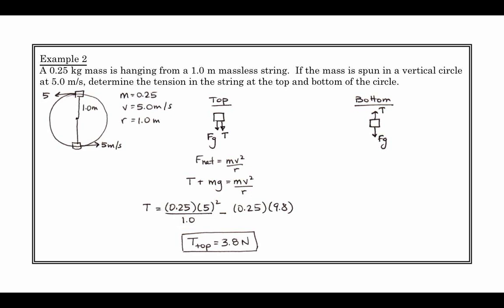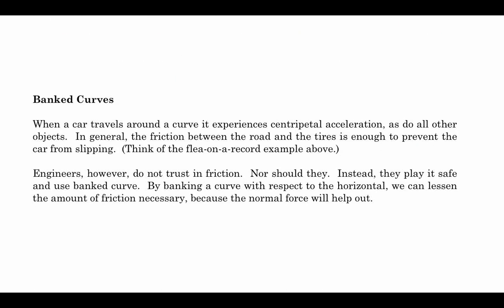When we look at the bottom though, F net is now equal to tension, which is up, minus mg, which is down, and that's equal to mv² over r. Rearranging, we get a little bit of a different answer. The tension at the bottom is 8.7 newtons. This is very true. When you're whipping something around in a circle, you'll notice there's more tension that's required at the bottom to keep it moving in a circle than there is at the top.